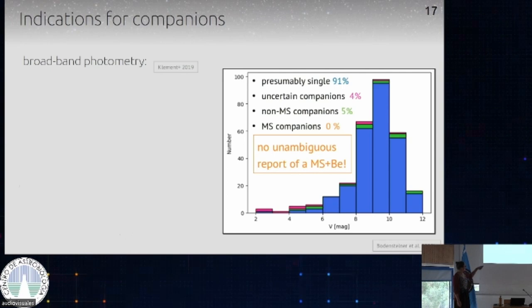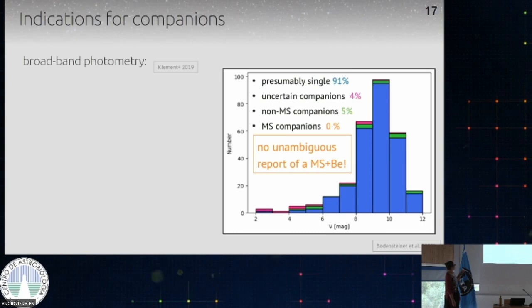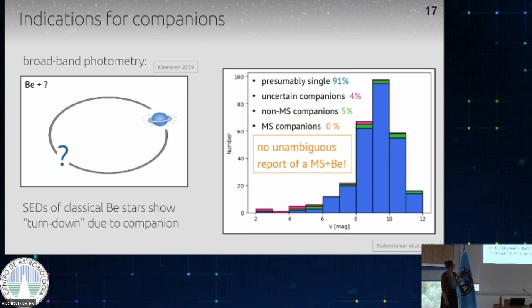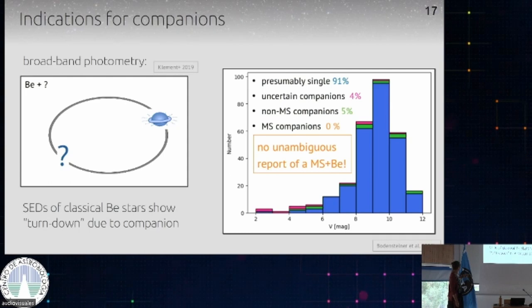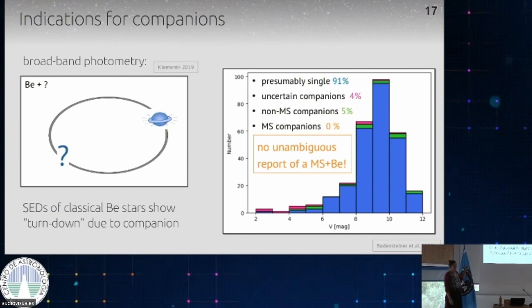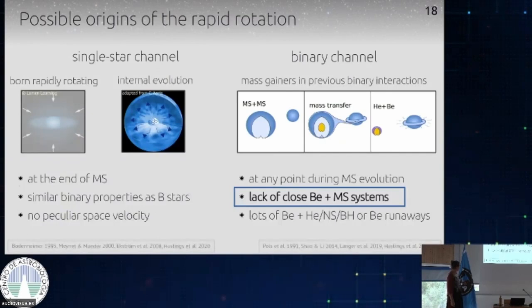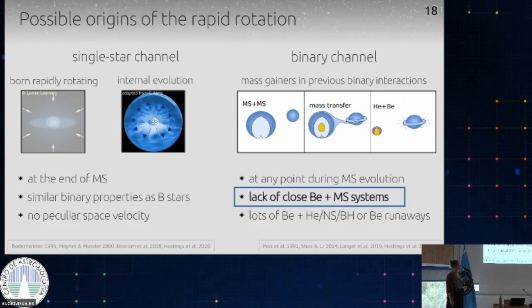Roughly 10% have some companions. There are newer studies that actually targeted BE stars using broadband photometry — for example, Klement et al. — who looked at the SEDs of these stars. They found indications in the SED that a companion is disrupting the outer parts of the disk, manifesting in the SED. So that's another argument for BE stars having companions that were not detected — and probably at least some of them are not main sequence companions. This is the second argument: probably a lot of BE stars formed through the binary channel because there is a lack of close main sequence companions.